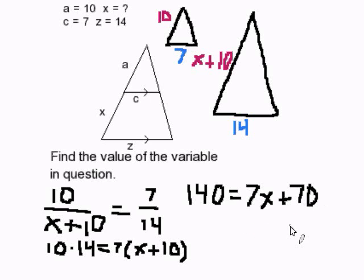Then what I'm going to do is subtract 70 from both sides, and I get 70 equals 7x. And the last step is to divide both sides by 7, which leaves me with x equal to 10.